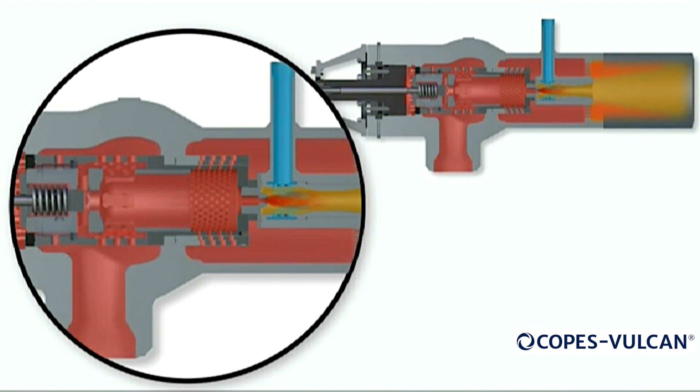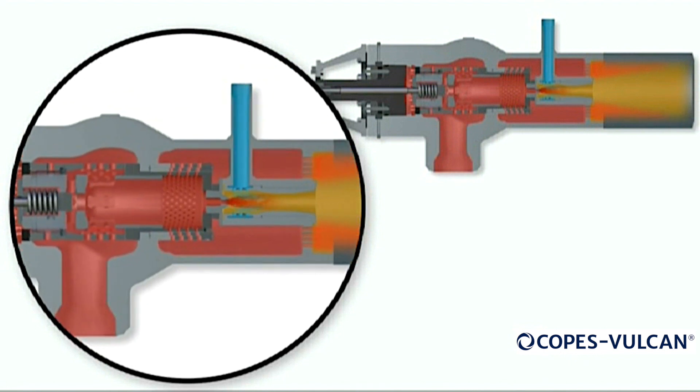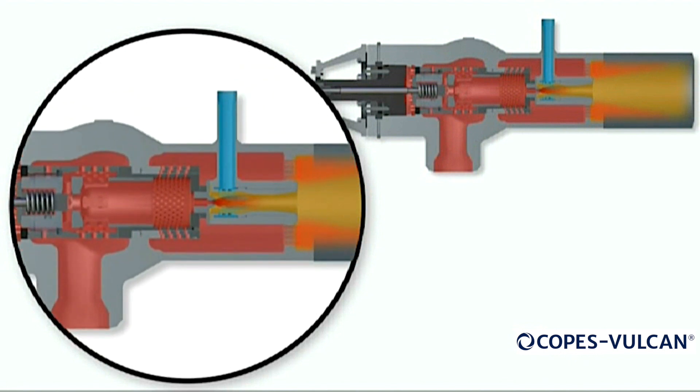After the inlet steam has passed through the distribution spacer, it now travels through the main seat area to the underside of the main plug via large feed ports. With the main plug now lifted, the pressure-reducing ports of the cage are now open to allow the steam to be pressure reduced in a controlled manner.